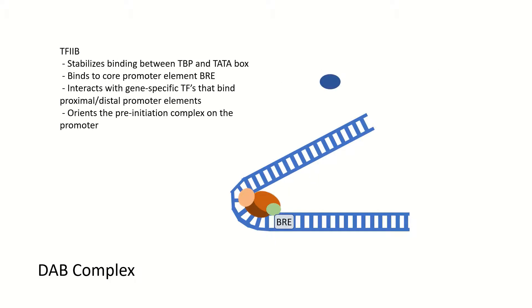The next step is TF2B binds to form the DAB complex. TF2B stabilizes the binding between TBP and the TATA box and interacts with transcription activators that bind proximal or distal promoter elements. TF2B is also thought to orient the pre-initiation complex on the promoter, marking the direction of future transcription and the position of the transcription initiation site, plus one, through bridging between TBP and RNAP2.